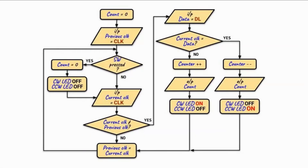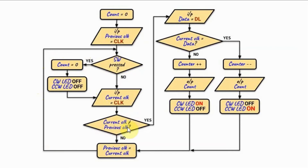A flowchart of the implemented code is shown here. We begin by initializing the count to zero, then input a clock bit and save it in variable previous clock. We then check the status of the switch. If the switch is pressed, we reset the count and turn off the clockwise and counter-clockwise LEDs. If not pressed, we input another clock bit and save it in variable current clock, then compare the current clock and previous clock bits. If they are equal, the clock has not changed state and the encoder has not been rotated, so we assign current clock to previous clock and loop back.